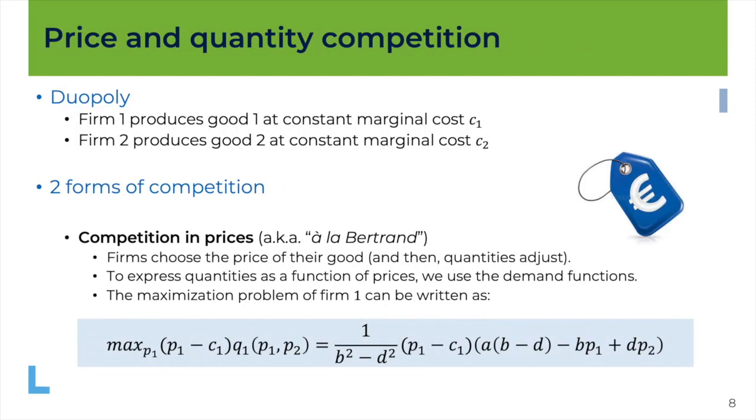Right, so this model, because we can from the same consumer problem derive the demands and the inverse demands, so prices as a function of quantities or the other way around, we can now use this model to analyze a duopoly where firms either choose quantities or choose prices.